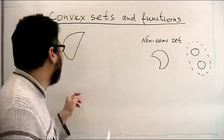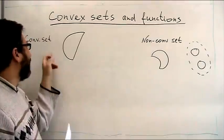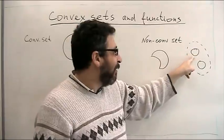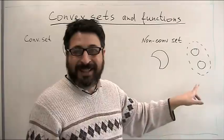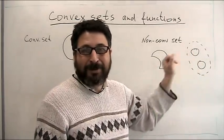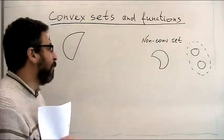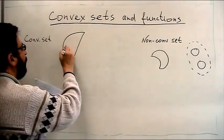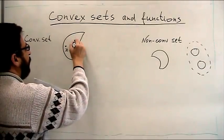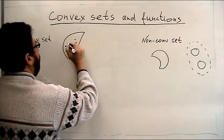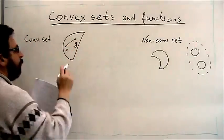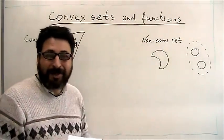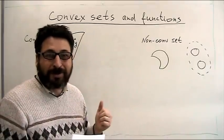Let's start with convex sets. Here I draw some examples — this is a convex set and this set is non-convex. Those two sets together as one set is also non-convex. Suppose I take arbitrary points x and y inside a convex set. Then for any pair of points, the interval of straight line between them should also belong to this set.